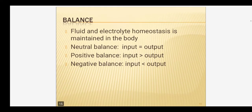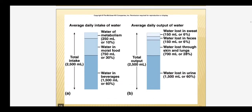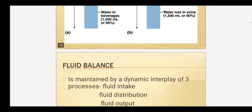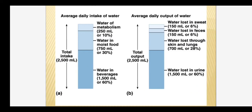It is very important that fluid and electrolyte homeostasis is maintained. Neutral balance means input is equal to output. Positive balance means input is greater than output. Negative balance means input is less than output. This diagram shows that input is equal to output — please go through it.